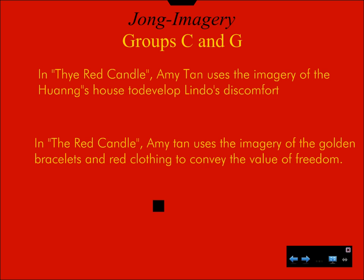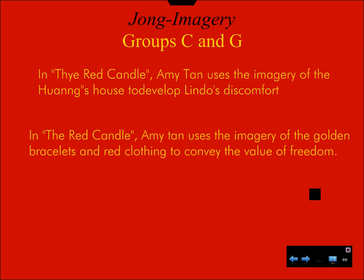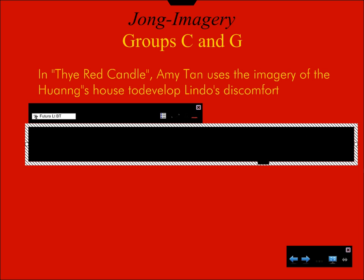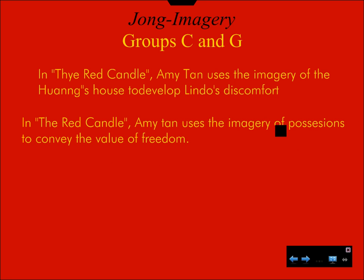All right. In 'The Red Candle,' Amy Tan uses the imagery of the golden bracelets and red clothing to convey the value of freedom. So you're almost saying that the imagery is symbolic in nature — that it symbolizes something. Let's condense this a little bit. Amy Tan uses the imagery of possessions — clothing and jewelry. What you don't want is specific elements like that; you want a category. So, Amy Tan uses the imagery of possessions. Let's go with that. To convey the value of freedom. I think that works just fine.